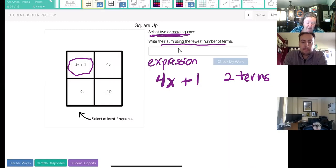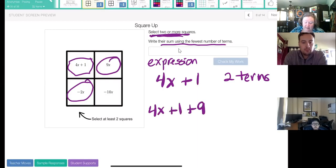If I selected that one and this one and this one, I would write these three as 4x plus 1 plus 9x. And there's two ways I could write the last one. I could put it as plus negative 2x, or I could just write it as negative 2x.